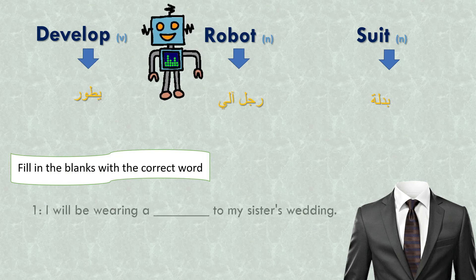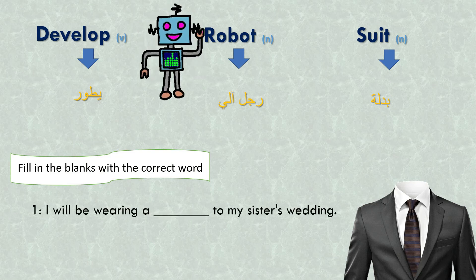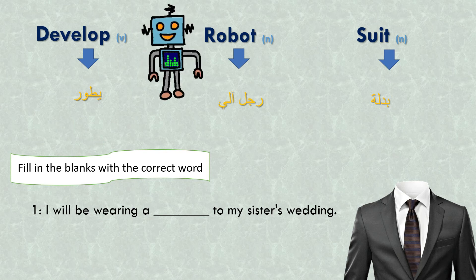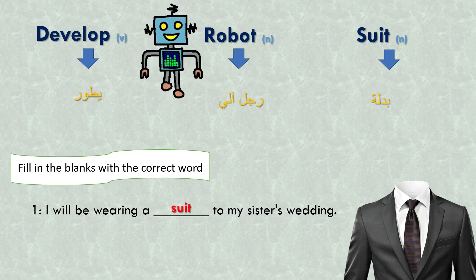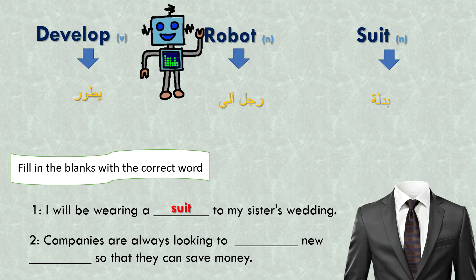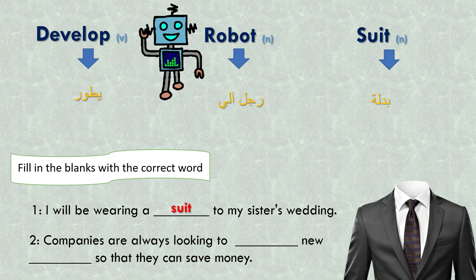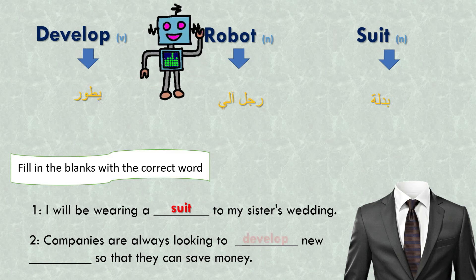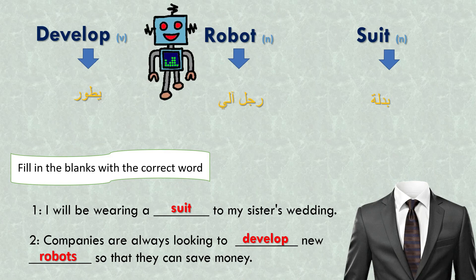Let's fill in the blanks with the correct word. Number 1: I will be wearing a ___ to my sister's wedding. Answer: suit. Number 2: Companies are always looking to ___ new ___ so that they can save money. Answer: develop new robots.